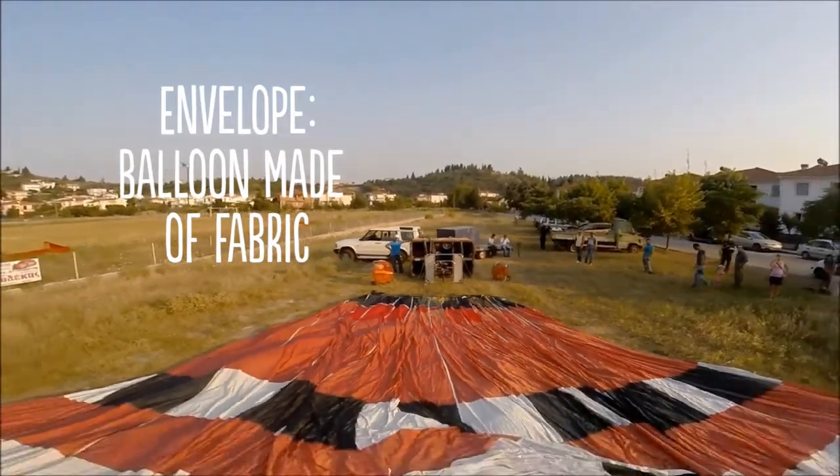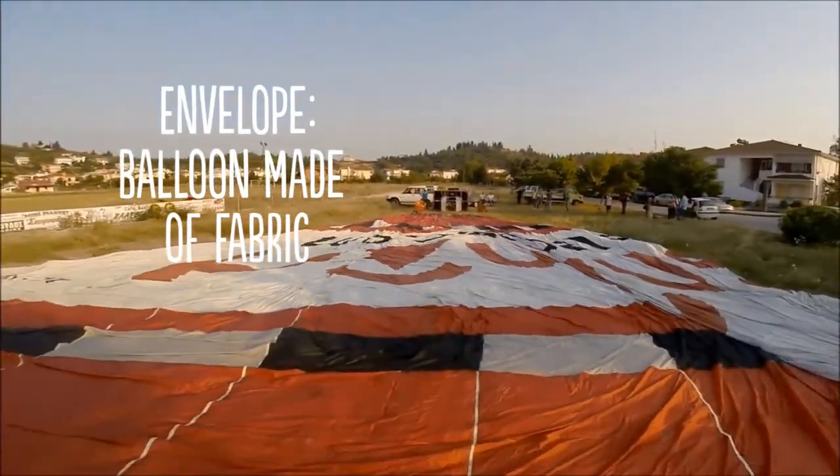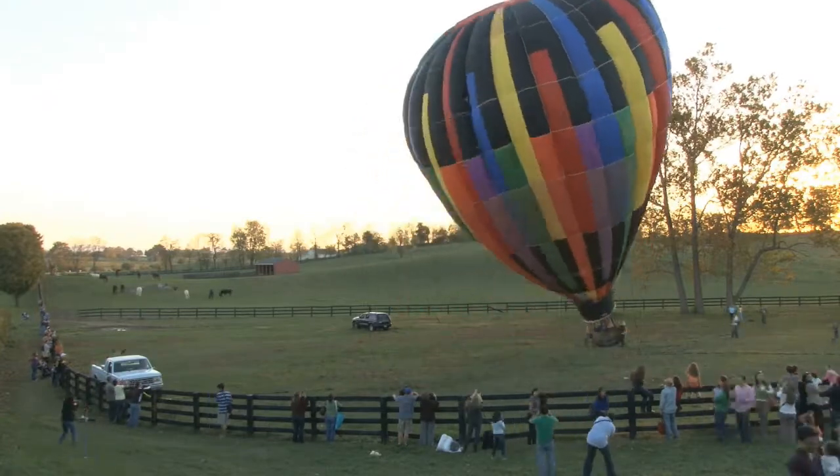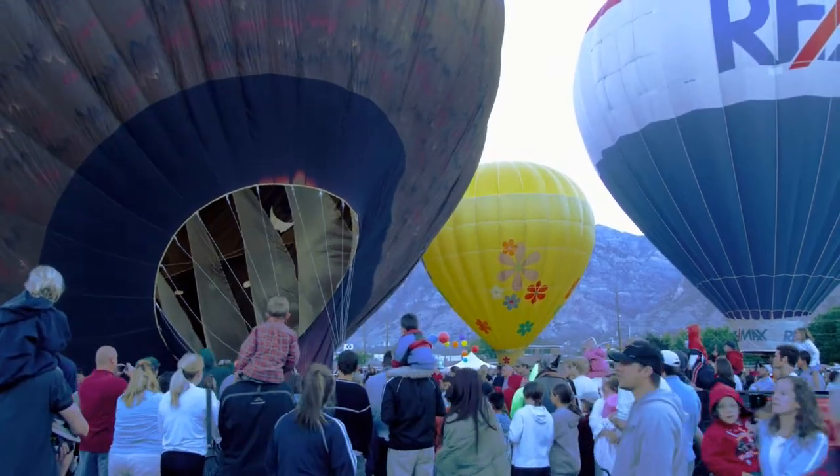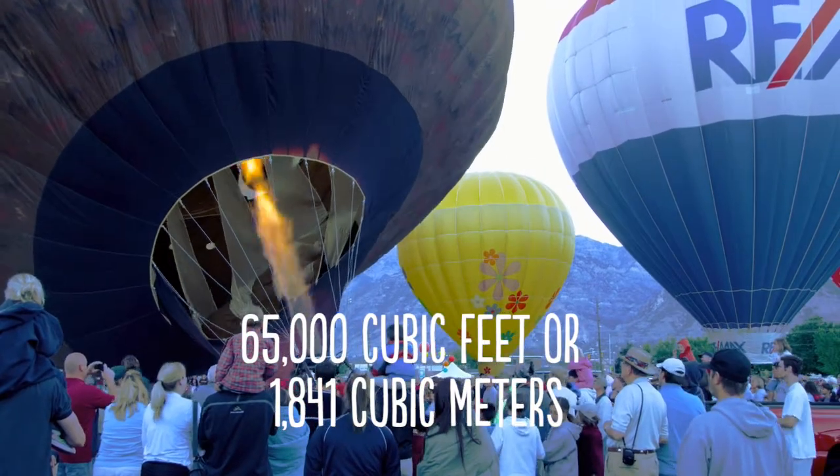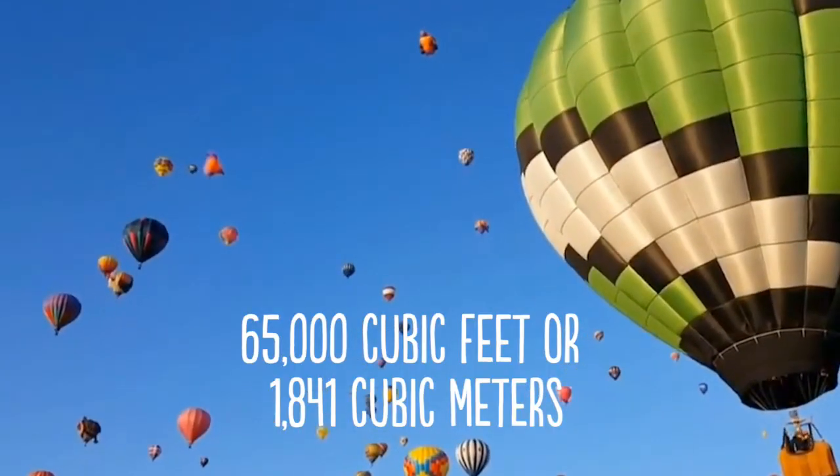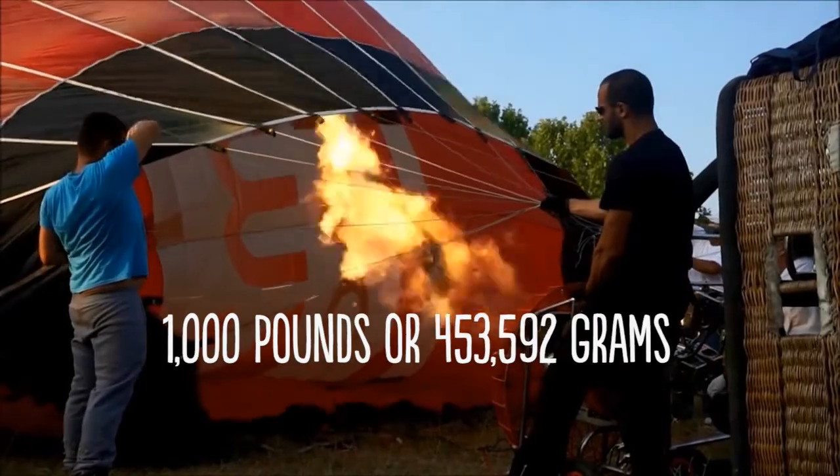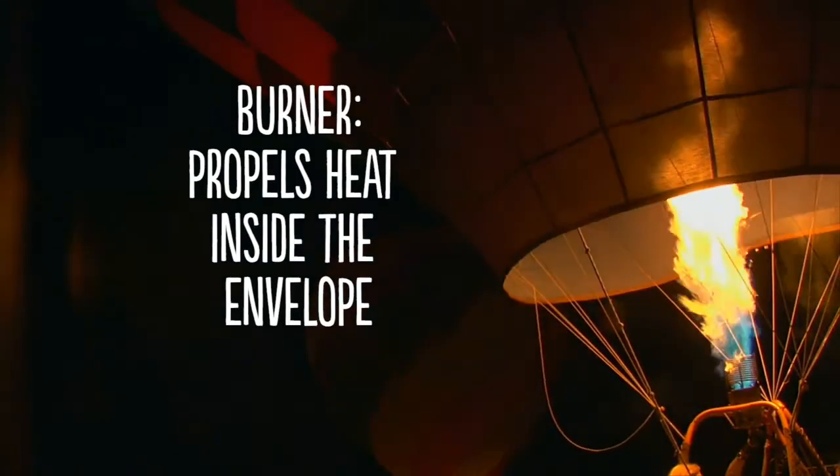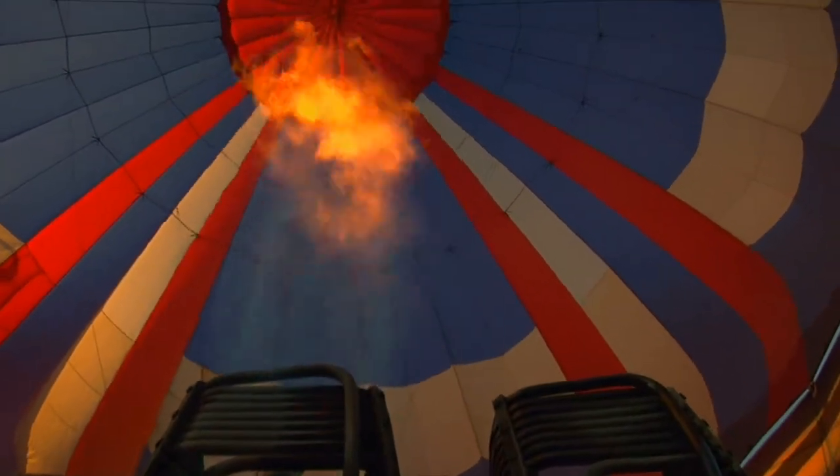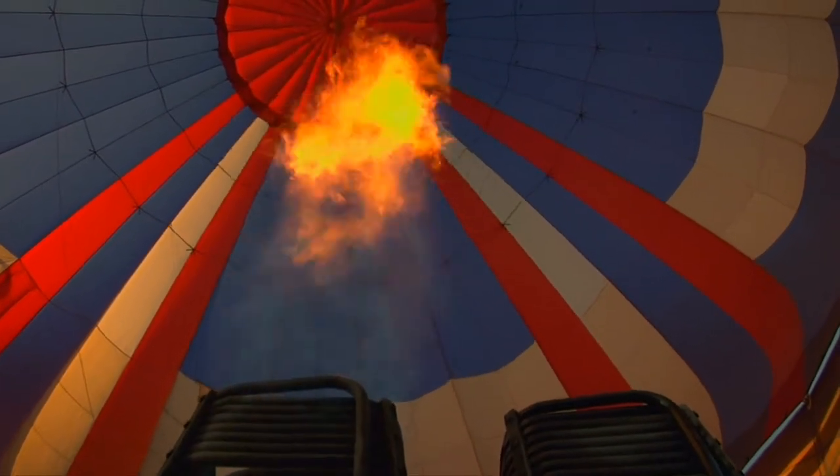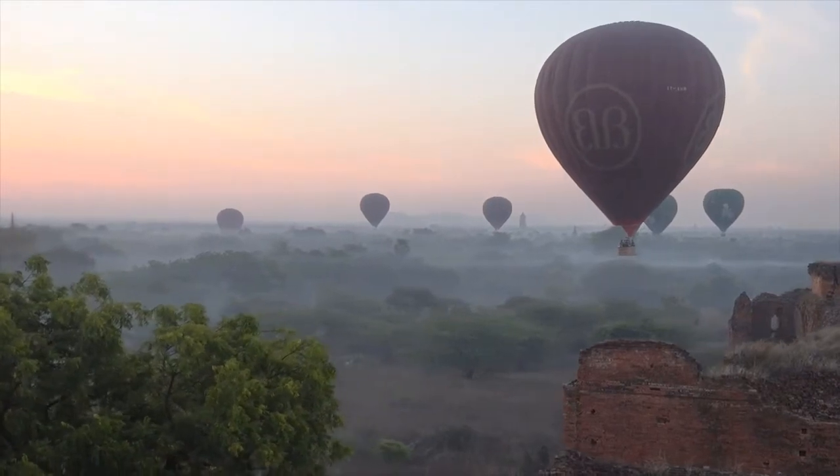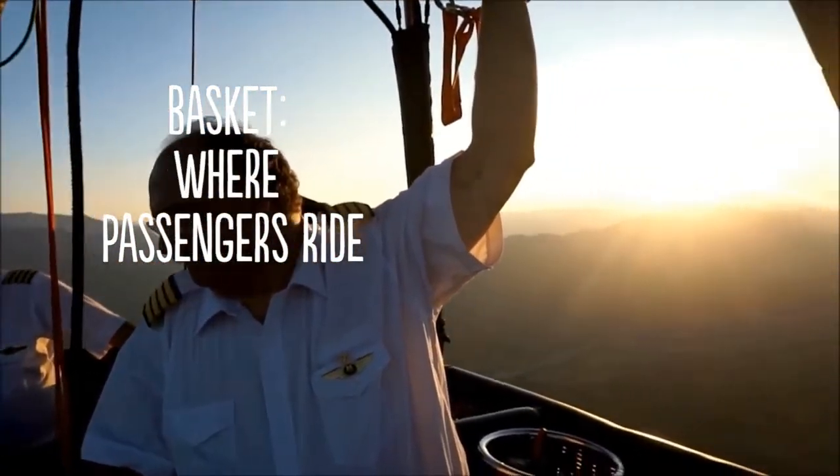The envelope is simply the balloon made of fabric which holds the air. It has to be large enough to contain heated air that will lift it off the ground. For instance, an envelope would need up to 65,000 cubic feet or 1,841 cubic meters of air if it were to lift 1,000 pounds or 453,592 grams. The burner is what propels heat inside the envelope. The burner uses propane gas to heat up the air into the envelope. This is also what makes the balloon move off the ground and rise into the air. And the basket is where the passengers and the pilot can stand.